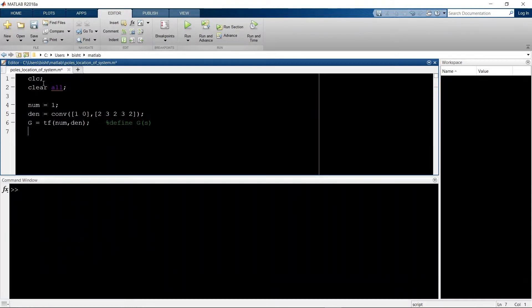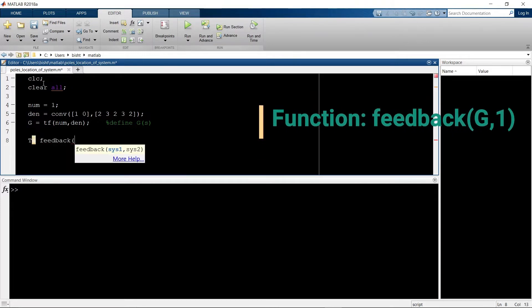In the problem, we have a negative feedback system, so we use the feedback function to create the closed-loop transfer function. Put one at feedback gain; by default it sets to negative feedback.